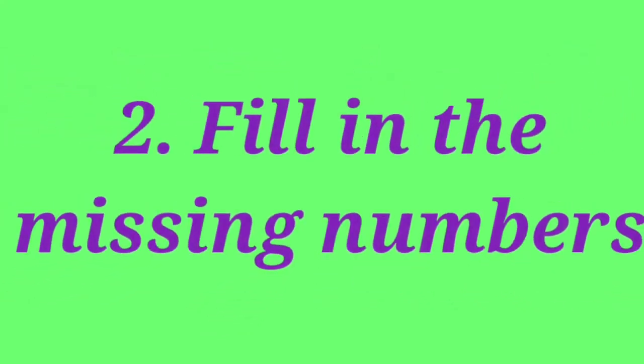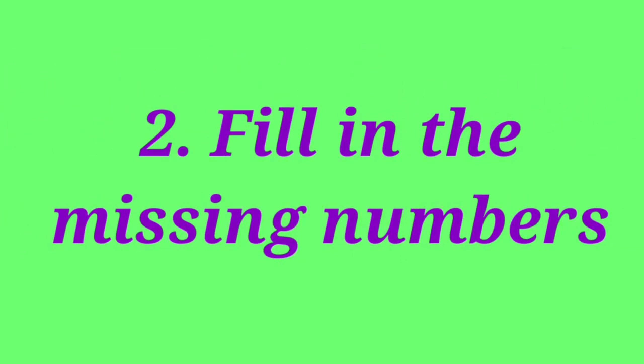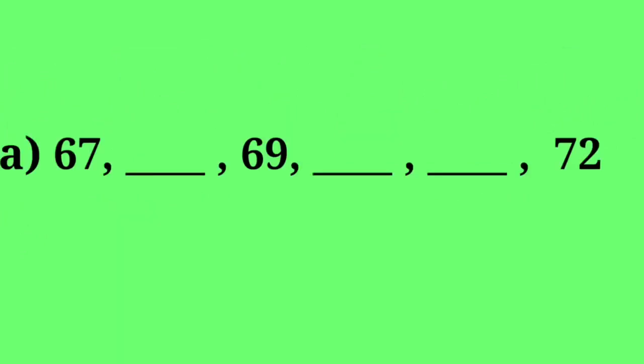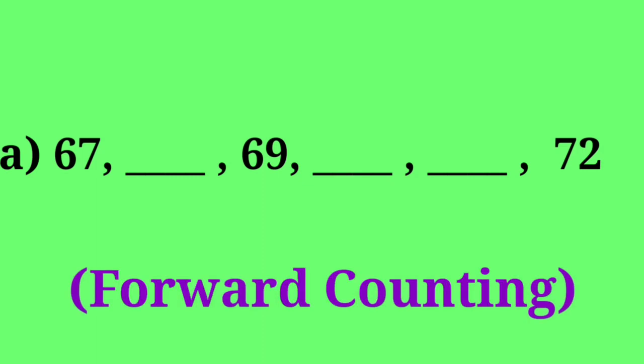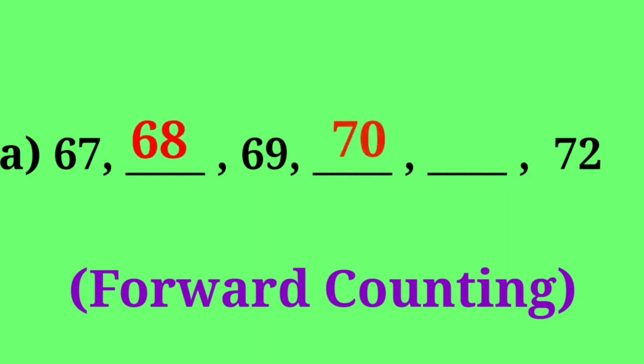Let us do the second bit children. Read the heading: fill in the missing numbers. Here they gave some numbers and some numbers are missing. You have to fill in the missing numbers. See the first one — the numbers given are 67, 69, 72, and three numbers are missing. If you observe, it is forward counting. So: 67, after that 68, 69, 70, 71, 72.